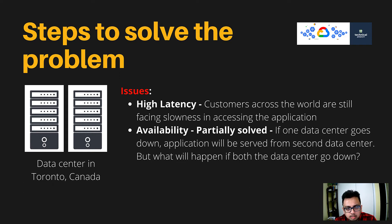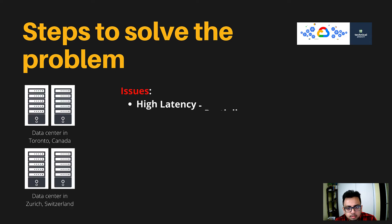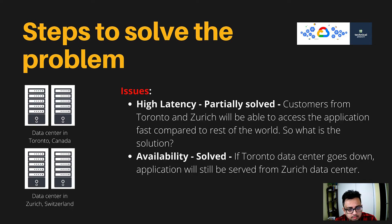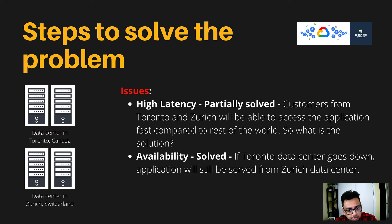What we can do is create two different data centers — one in Toronto, Canada and one in Zurich, Switzerland. High latency is partially solved: customers near Toronto or Zurich will find the application fast, but customers far from both locations will still experience slowness. Availability is fully solved — if the entire Toronto data center goes down, the application will still be served from the Zurich data center.